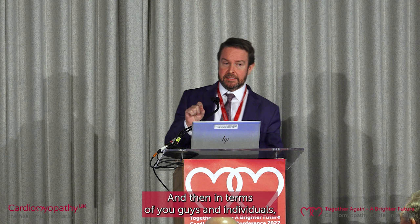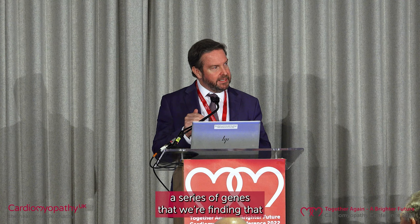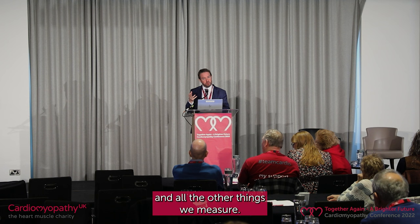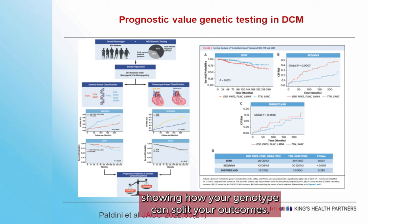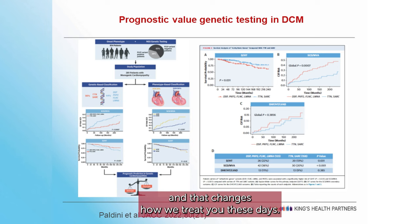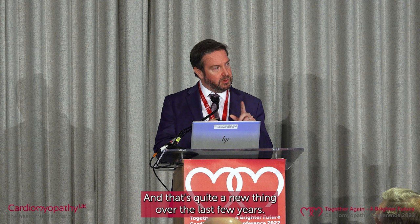Genetic testing is changing in terms of its value for individuals, not just families. There are now a series of genes that actually have prognostic value — some genes have more prognostic value than your ejection fraction and all the other things we measure. Things like lamin genes, filamin genes, some of the arrhythmogenic cardiomyopathy genes put you at higher risk and change how we treat you. Normally it lowers the threshold for putting in defibrillators. So genetic testing does have prognostic value these days — quite a new thing over the last few years.